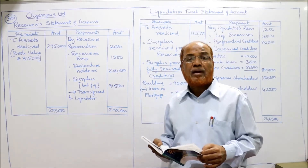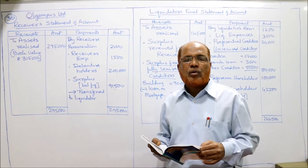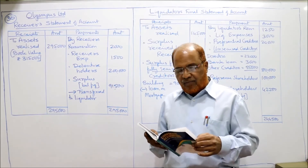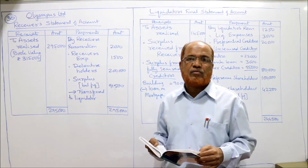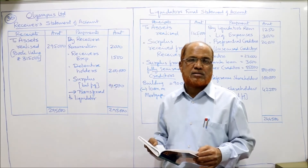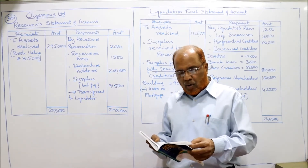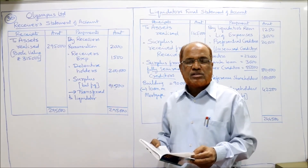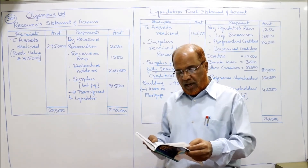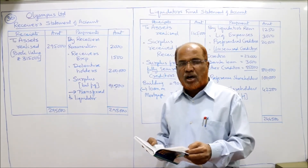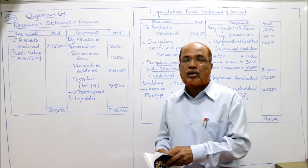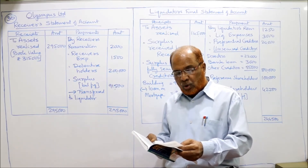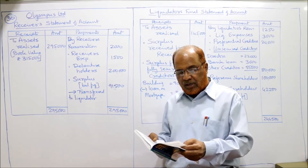Loan on mortgage: 80,000. Bank account (bank overdraft on liability side): 25,000. Creditors: 75,000 — including 20,000 for assessed tax. Any amount due to the government is a preferential creditor, so 20,000 is preferential and the remaining 55,000 are unsecured creditors. The mortgage was secured on the building. The debentures were secured by floating charge on sundry assets. The debenture holders appointed a receiver who took charge of the sundry assets amounting to 3,15,000.